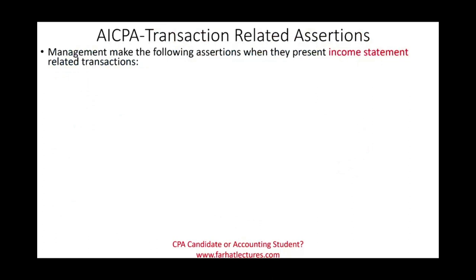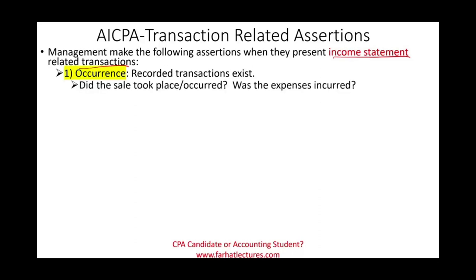The AICPA transaction-related assertions deal with management making claims when they present the income statement. When they present the income statement, they're making claims about transactions that dealt with those income statement items. The first assertion is occurrence: the transaction you are seeing actually exists. Did the sale take place? Was the expense incurred? They're claiming it happened if they're showing it to you. Your job is to collect evidence to determine whether it actually happened.